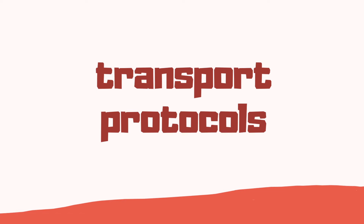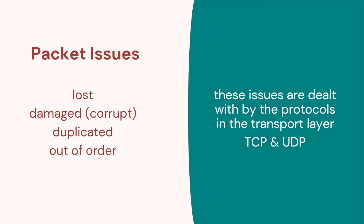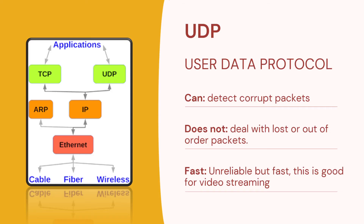Now let's look at protocols. Packets can get lost; the data inside might be corrupt or damaged; we might get duplicated packets; and because packets are cut up, they might arrive out of order. We looked at IP addresses for the IP protocol. Now we're looking at two other protocols in the transport layer: TCP and UDP. UDP stands for User Datagram Protocol and it can detect if packets are corrupt, but it doesn't deal with other issues. This service is fast but not very reliable, so it's good for things like video streaming.